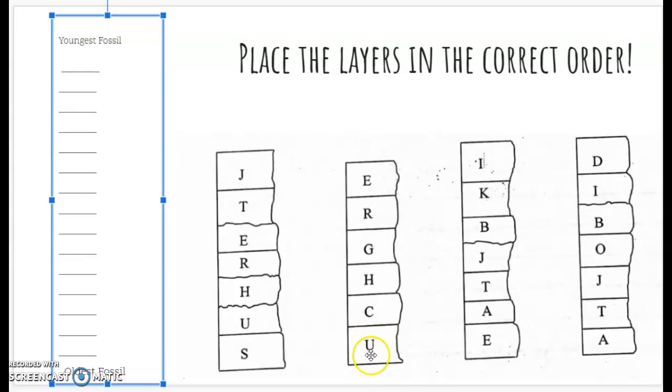I'm looking at the letter U and I'm going to see if it's in any of these other columns, and I can see the letter U right here. And since the S is below the letter U and there's no S in any other column, I can say that the oldest fossil is letter S. So I'm going to put a letter S in my box.